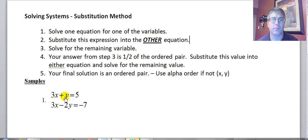So in this example of 3X plus Y equals 5, we're going to rewrite this and solve it for Y. We're not going to mess with the bottom one because it's going to give us fractions. So we will rewrite this equation for Y, and it will become Y equals negative 3X plus 5. So now we know what Y is.